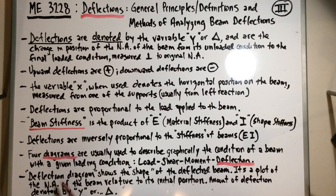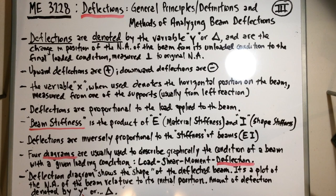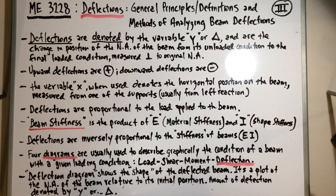The deflection diagram shows the shape of the deflected beam — basically a plot of the neutral axis relative to its initial position. The amount of deflection is denoted by y or delta; you'll see y-max or y at a specific location along the beam. Let me show you a diagram illustrating some of these deflections.